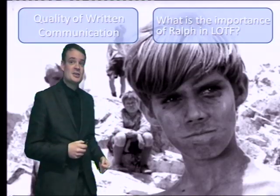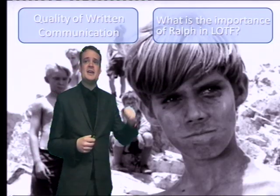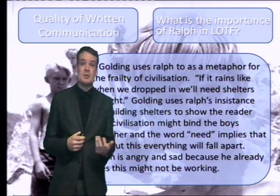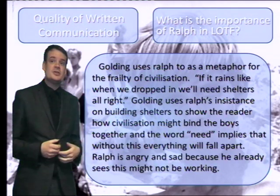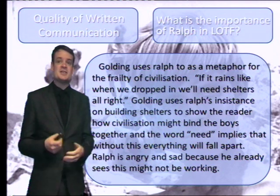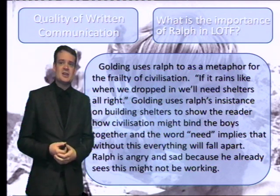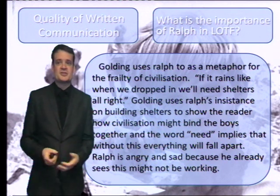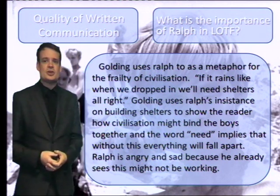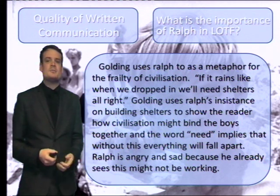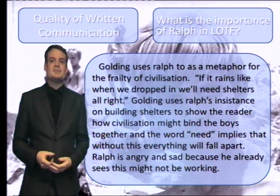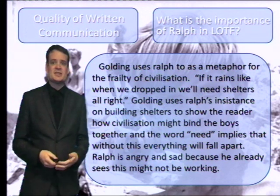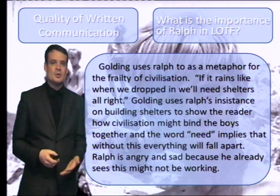Let's look at that example. Remember, the question is: what is the importance of Ralph in Lord of the Flies? Here's my example answer. 'Golding uses Ralph as a metaphor for the frailty of civilization. If it rains like when we dropped in we'll need shelters all right. Golding uses Ralph's insistence on building shelters to show the reader how civilization might bind the boys together, and the word need implies that without this everything will fall apart. Ralph is angry and sad because he already sees this might not be working.'